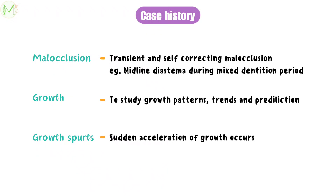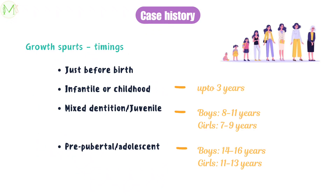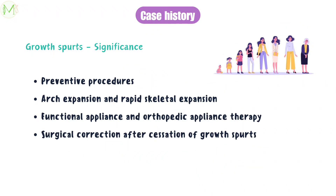An important concept is growth spurt. Growth doesn't take place uniformly at all times; sudden acceleration of growth occurs at certain ages. Growth spurt timings are just before birth, the infantile or childhood period up to 3 years, the mixed dentition or juvenile period which is 8–11 years in boys and 7–9 years in girls, and the pre-pubertal or adolescent period which is 14–16 years for boys and 11–13 years for girls. Interceptive orthodontic treatments are carried out during this period, and malocclusion can be corrected by arch expansion and rapid skeletal expansion during maximum growth.